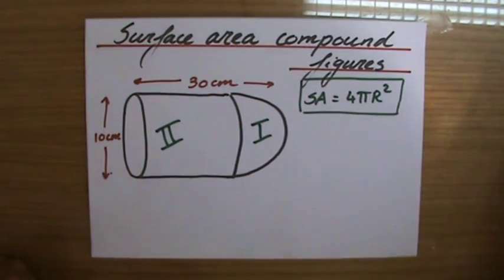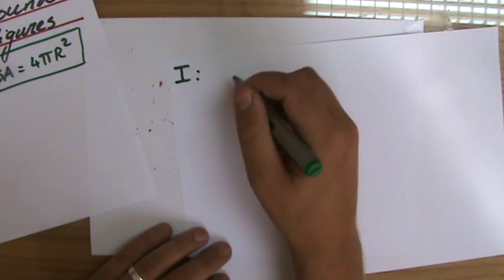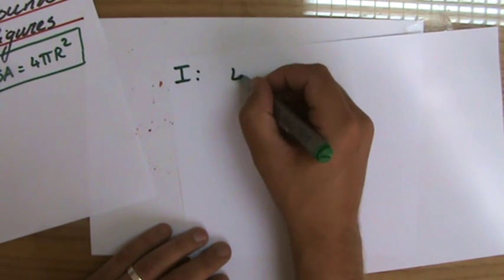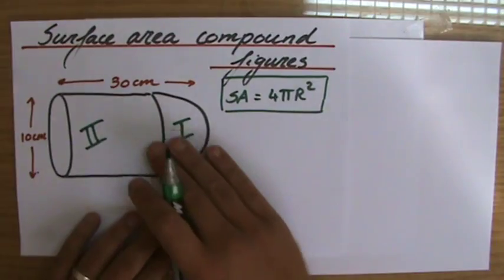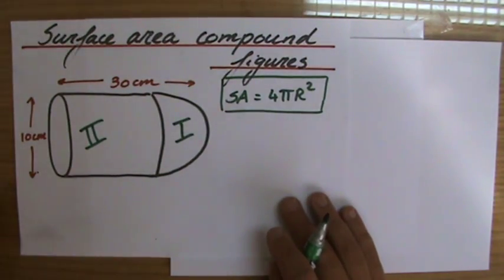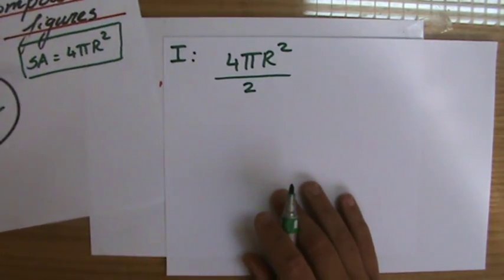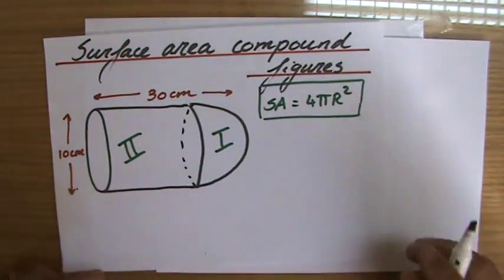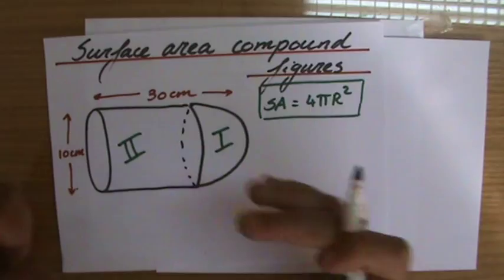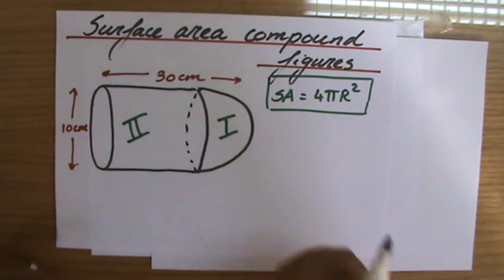Let's start with the hemisphere. They say the surface area of a sphere is 4πr², so to find the surface area of a hemisphere I divide that by 2. The circular base is not part of my surface in this case, because I have the cylinder attached to it. So the surface area for my hemisphere is 4πr² divided by 2.